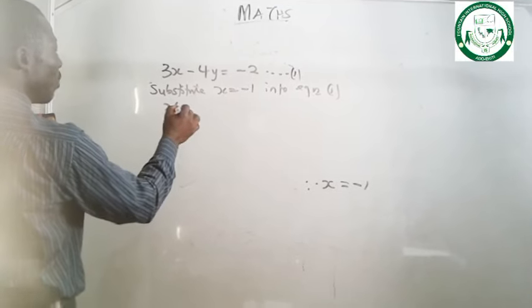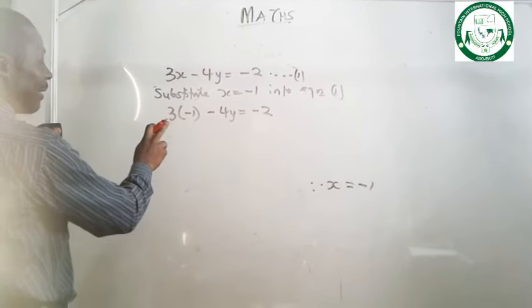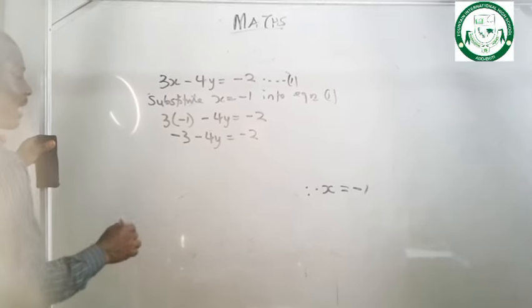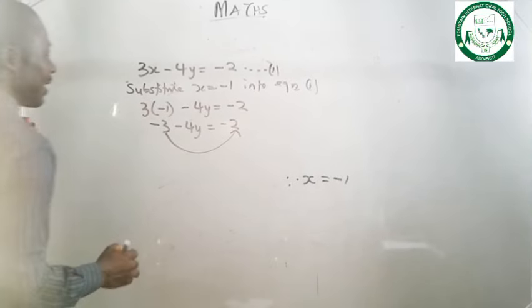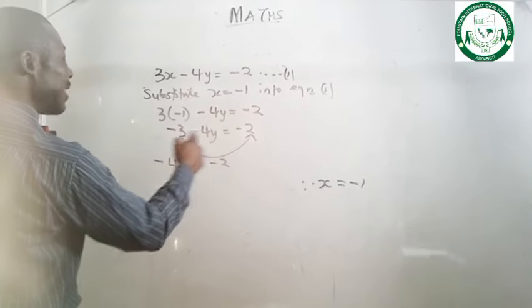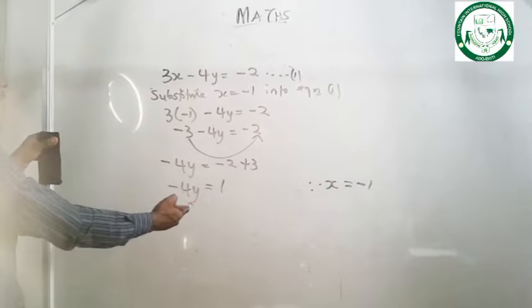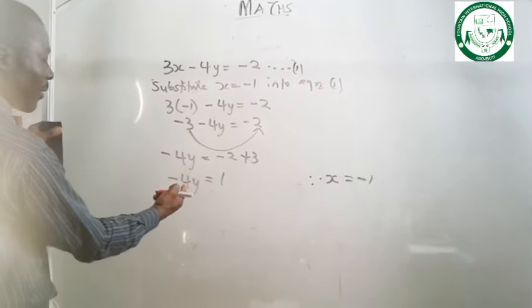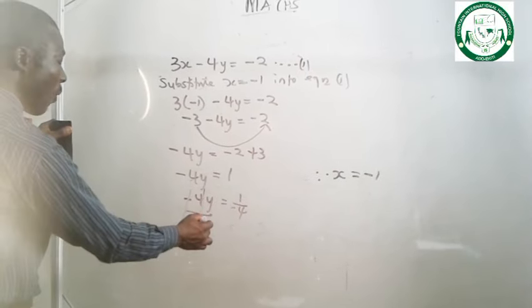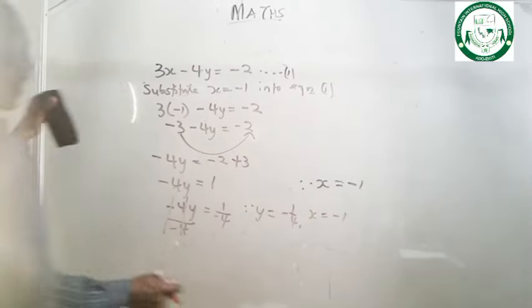Equation 1 becomes 3 times minus 1 minus 4y equals to minus 2. Minus 1 times 3 gives us minus 3, so we have minus 3 minus 4y equals to minus 2. Collecting like terms: minus 4y equals to minus 2 plus 3, which gives minus 4y equals to 1. Dividing both sides by minus 4: y equals to minus 1 over 4. By using equation 1, x equals to minus 1, y equals to minus 1 over 4.